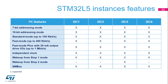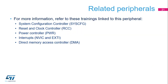STM32L5 microcontrollers embed four I2C peripherals, all with the same set of features, except for the I2C3 port, which is the only instance supporting wake-up from stop 2 mode. The I2C address match condition causes the device to exit stop 0 and stop 1 modes, and only I2C3 can generate a wake-up interrupt from stop 2 mode in case of address match.